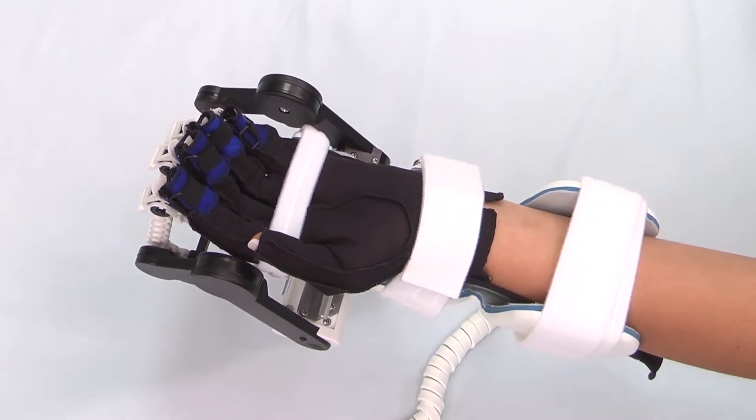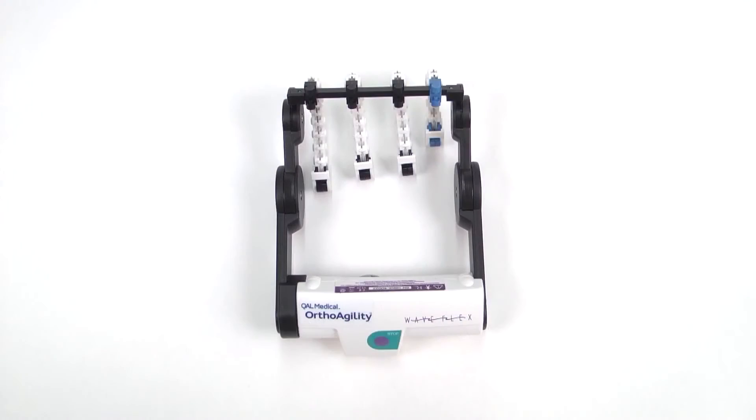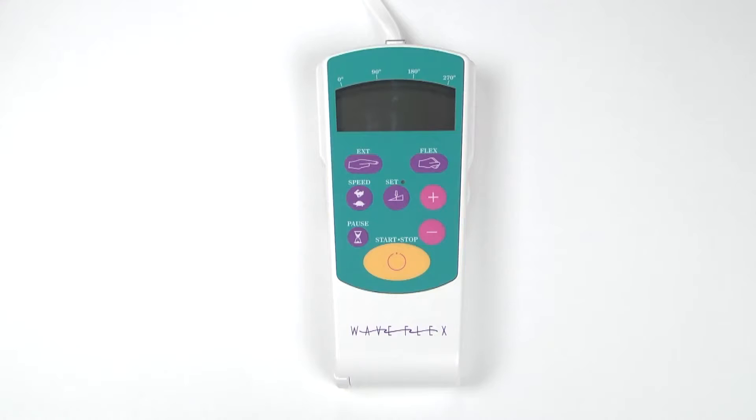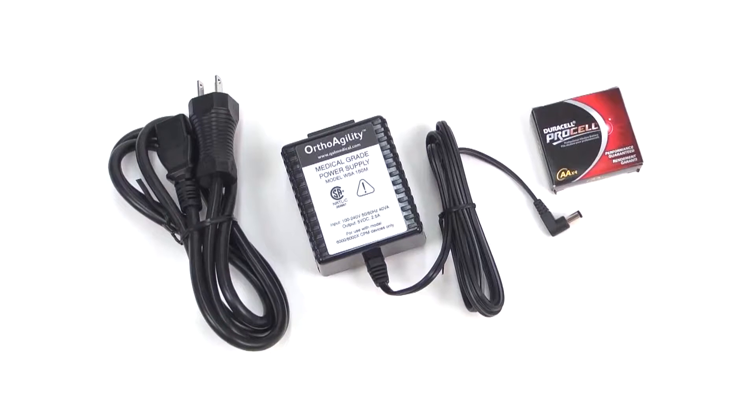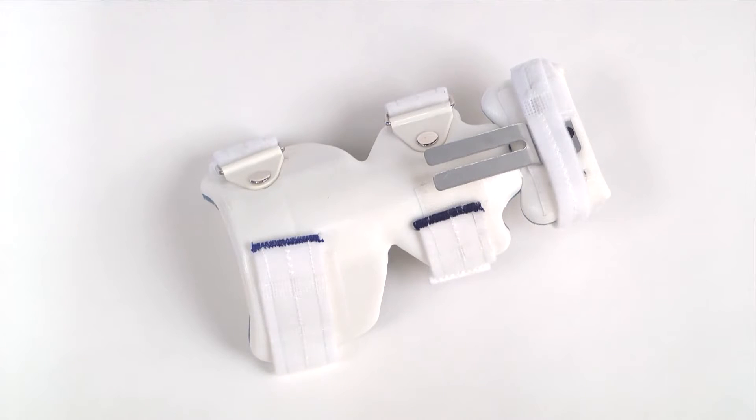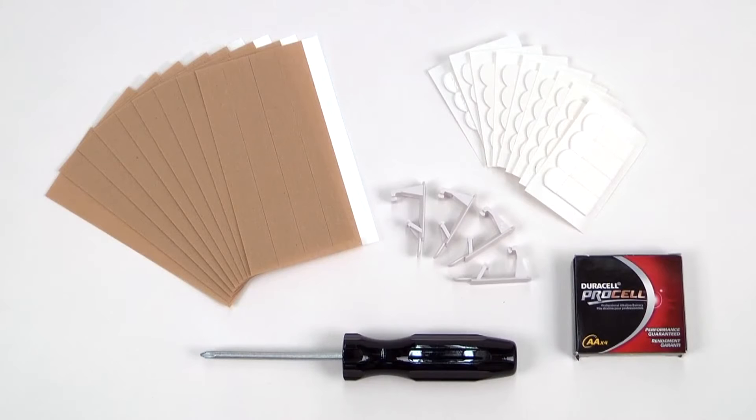Each WaveFlex comes with a CPM main actuator, a set of finger actuators, programmable controller, power supply, and batteries. Also included are a large-sized splint, finger strip bandages, VHB tape, finger clips, and a Phillips screwdriver.